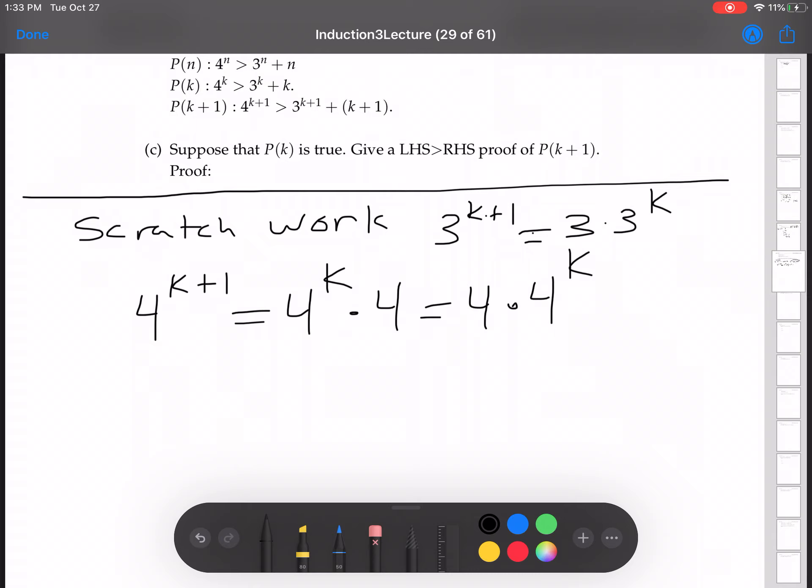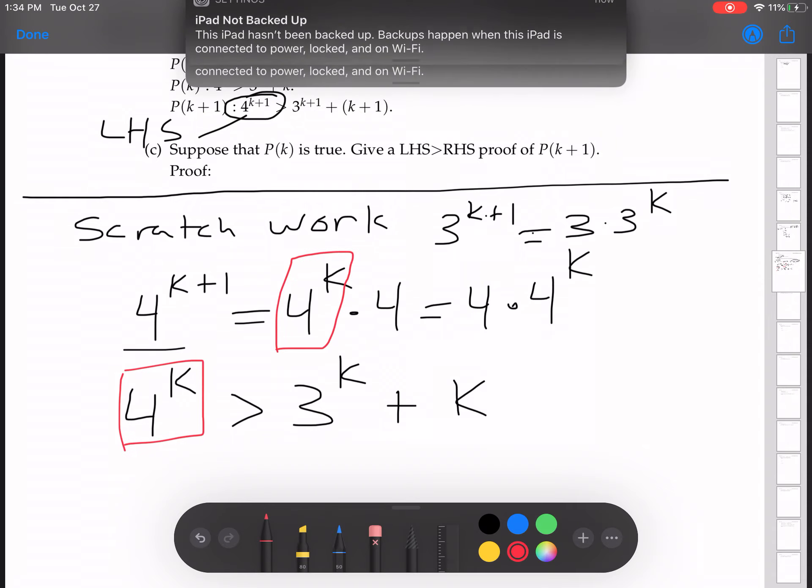Now the idea is, remember, you want to use the assumption. The assumption is what's going to allow you to make the step to prove the inductive step. So the inductive hypothesis or the inductive assumption is what's going to help you. Writing down the inductive hypothesis, that is 4 to the k is bigger than 3 to the k plus k. And then you say, okay, look at what's on my left-hand side here of what I want to prove. That's 4 to the k plus 1, and you see there's this 4 to the k in there, which is exactly that right there.